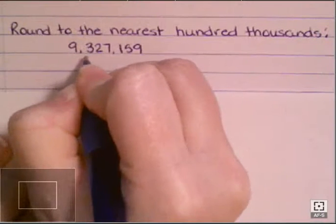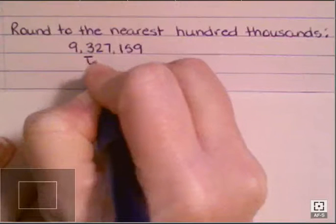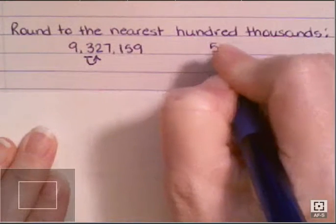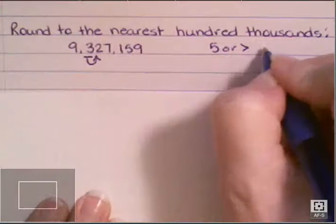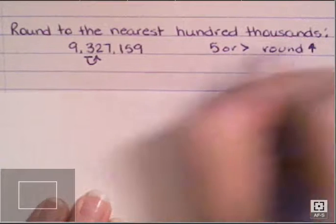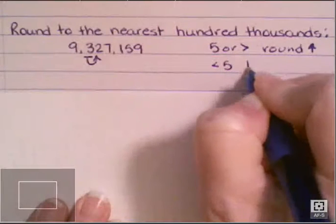And when I find that place, I'm going to draw a line under that placeholder. Now in order to round, you're going to look at the number directly to the right. If it's five or greater, then I'm going to round up. And if it's less than five, I'm going to leave it the same.